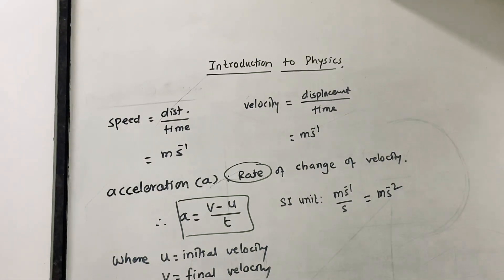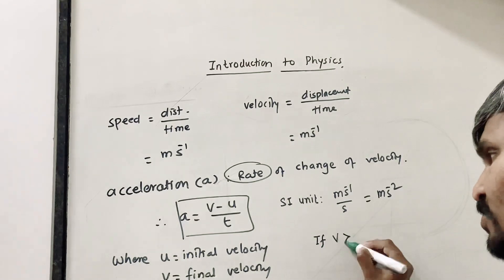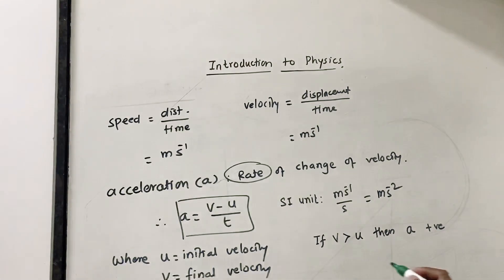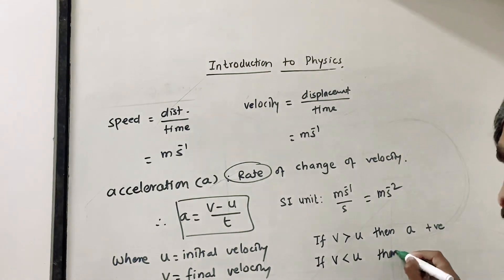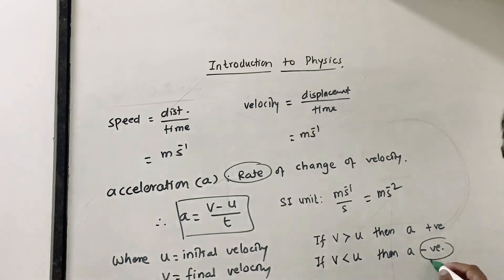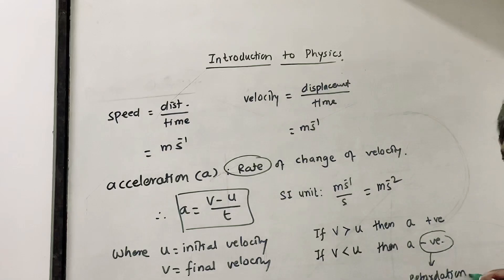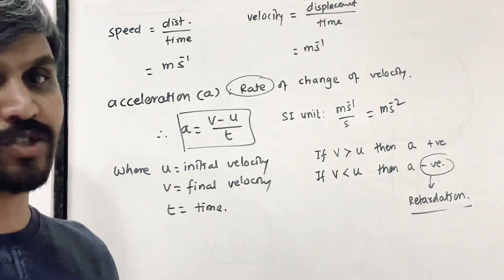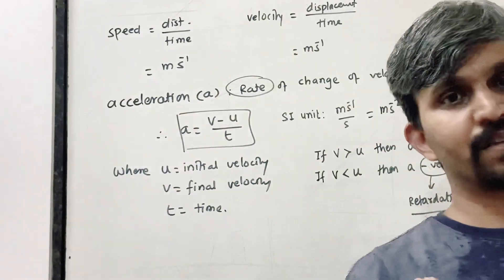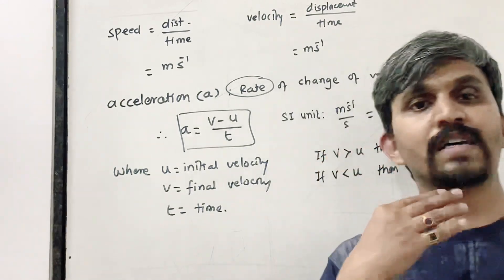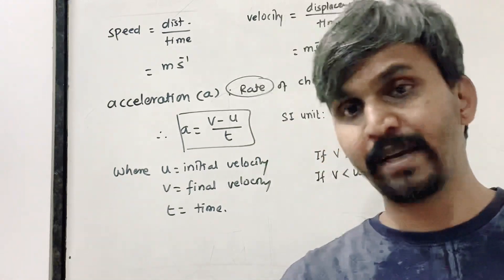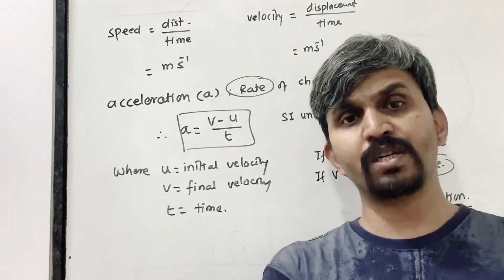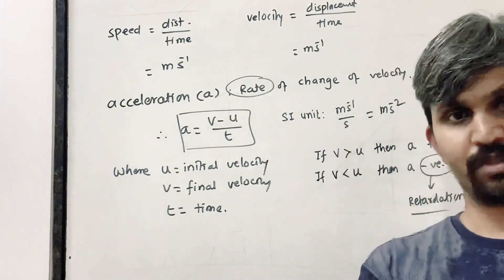If the final velocity is greater than the initial velocity, acceleration is positive. If the final velocity is less than the initial velocity, acceleration is negative — this negative acceleration is also called retardation. For example, when you start a car from rest, you are accelerating. When you apply brakes and reduce speed, that is retardation.